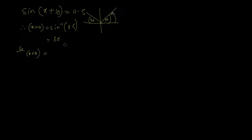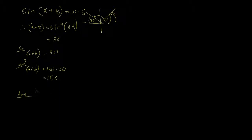So x + 10 is the basic angle. In the first quadrant it equals 30, and in the second quadrant it equals 180 minus 30, which is 150. Now when you write down the answer, it has to be in terms of x, so only in the last line do you find x. Here x = 30 − 10 = 20, and here x = 150 − 10 = 140. This is how you do a compound angle sum.